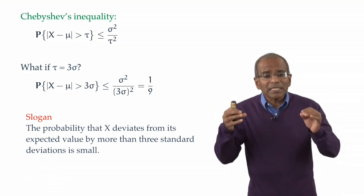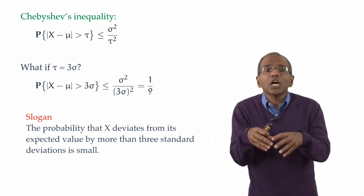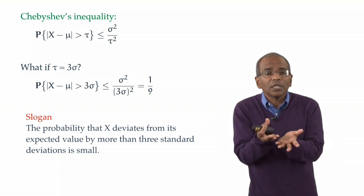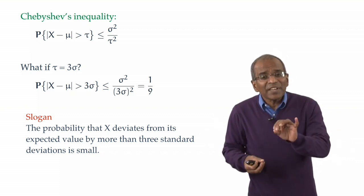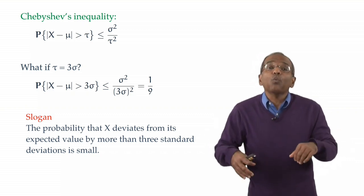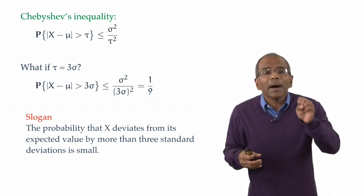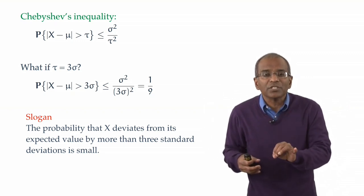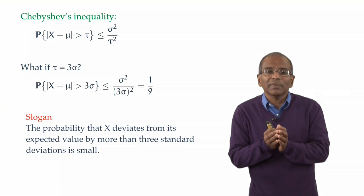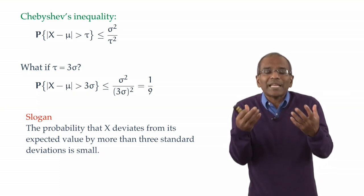What we've discovered is that the probability that a chance variable on the continuum deviates from its expected value, whatever it is, by more than three standard deviations is small. It's no more than about 10 percent.